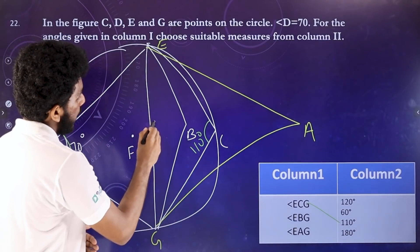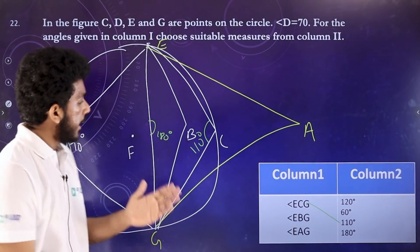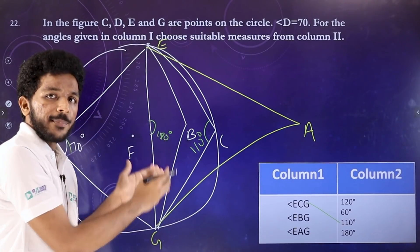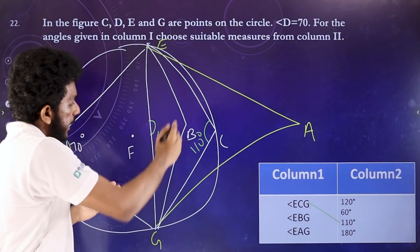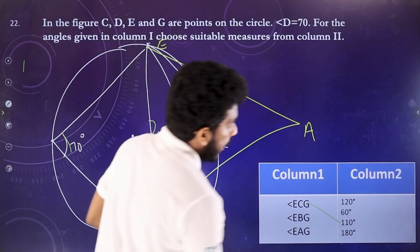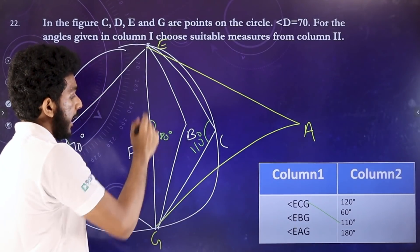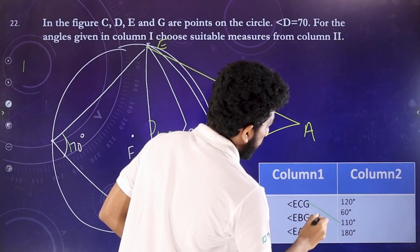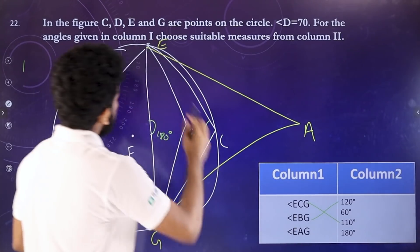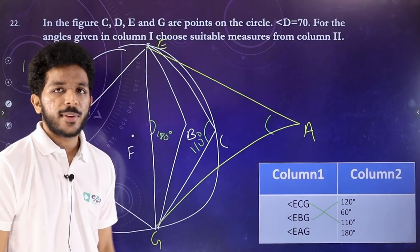This angle is 110 and this one is 180. If you take these two angles, that's 180 and 110. EBG — you cannot use 120 directly. Because it's a line, EBG is 120. It's very simple. It's EAG — this is 180 degrees.